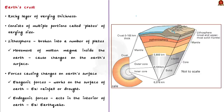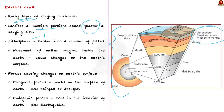The earth's crust is a rocky layer of varying thickness. It does not occur as a single piece but consists of multiple portions called plates of varying size. The lithosphere is broken into a number of lithospheric plates. These plates move very slowly due to the movement of molten magma inside the earth, causing changes on the earth's surface. One of the forces causing these changes is the endogenic force, which acts in the interior of the earth and produces slow as well as sudden movements — one of which is the earthquake.